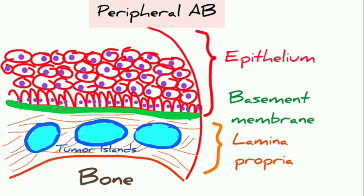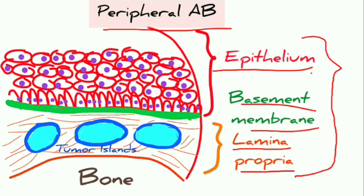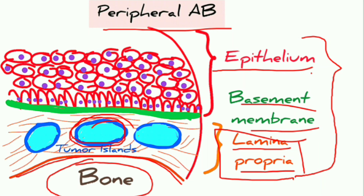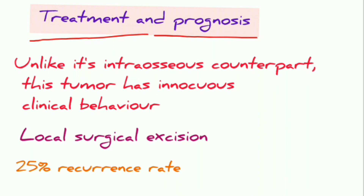Histologically, the peripheral ameloblastoma is seen as blue color masses present outside the bone, beneath the epithelium within the lamina propria — beneath the upper epithelium and basement membrane of the gingiva or mucosa, with bone below.